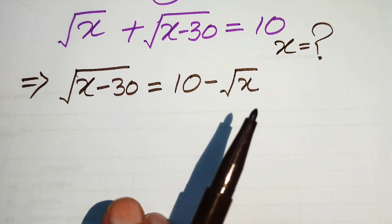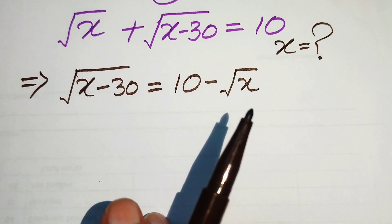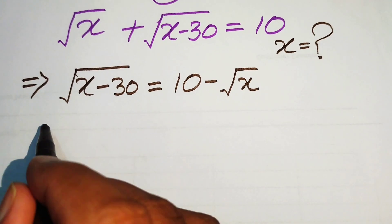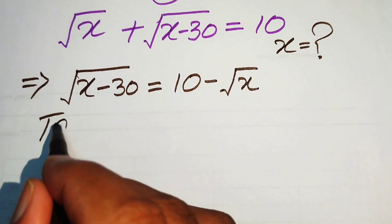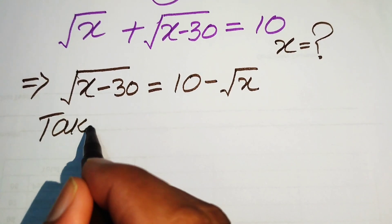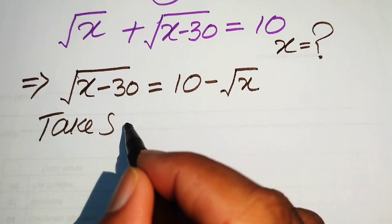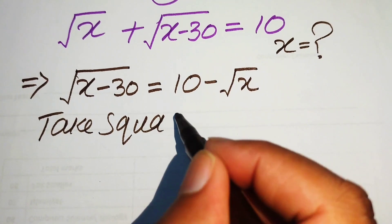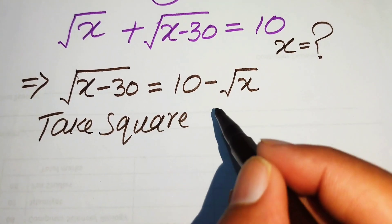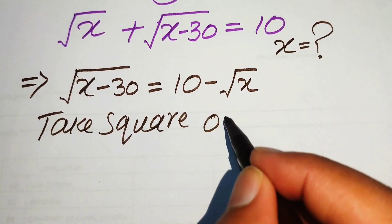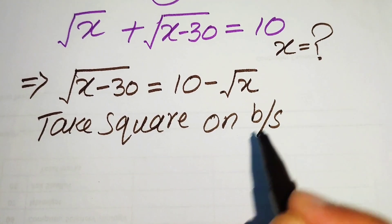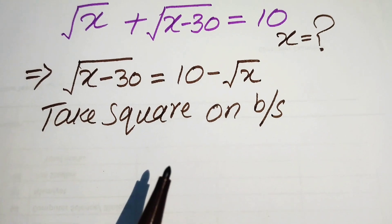Now, in order to remove this radical sign, we need to take the square on both sides of the given equation.